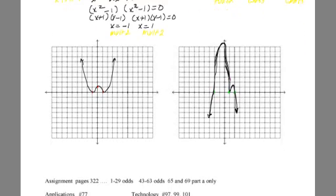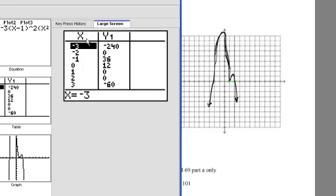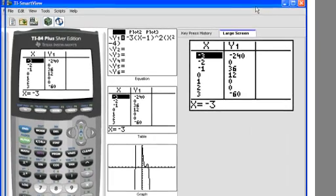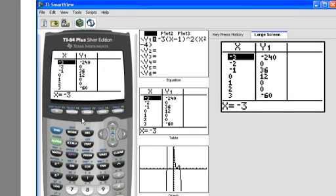An awesome feature of that calculator is using the table feature. Use that table feature, second table, to see what are those x-intercepts? Can I find them from my calculator?